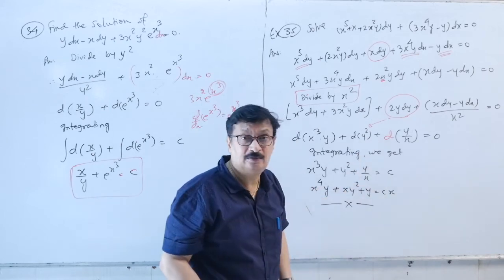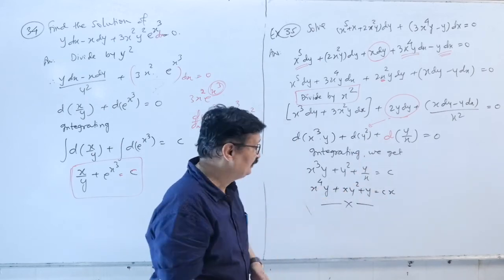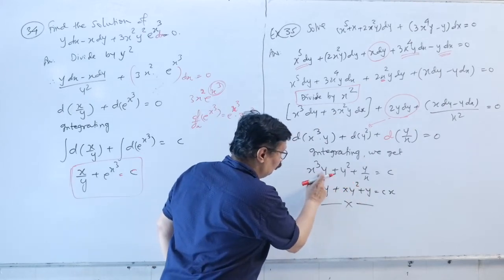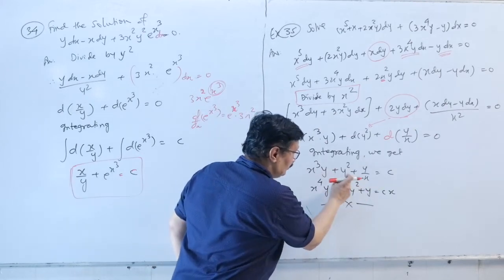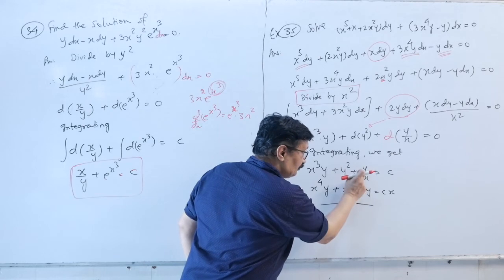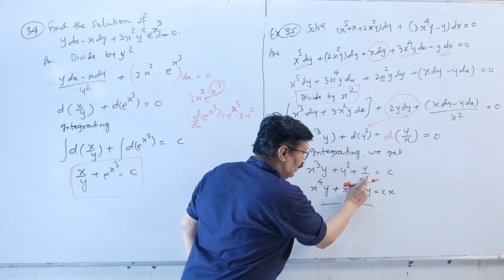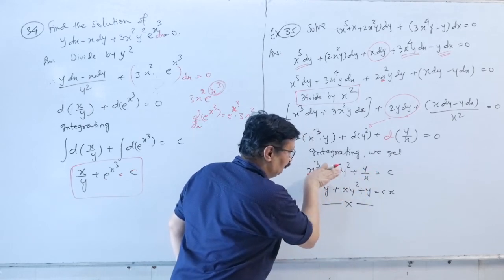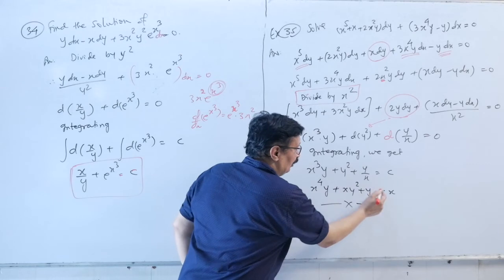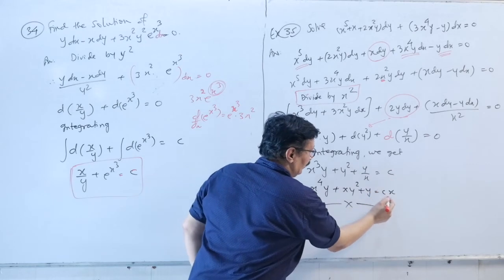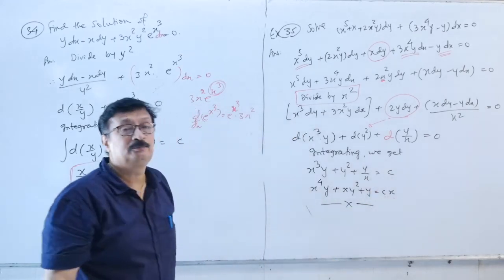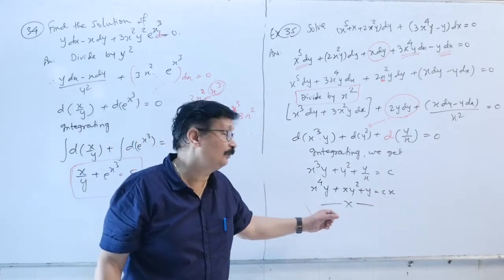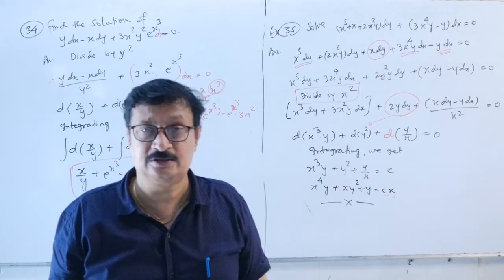Taking LCM: x⁴·y + x·y² + y = cx, which is the answer (matching the textbook answer).